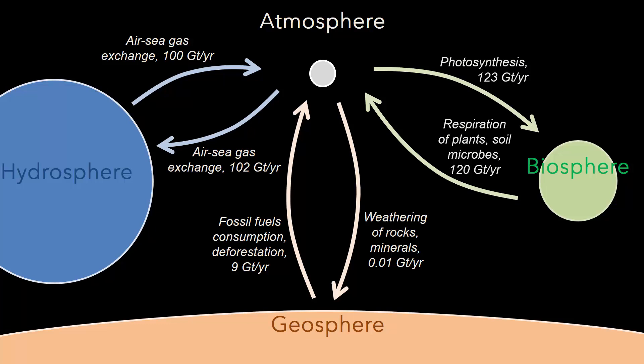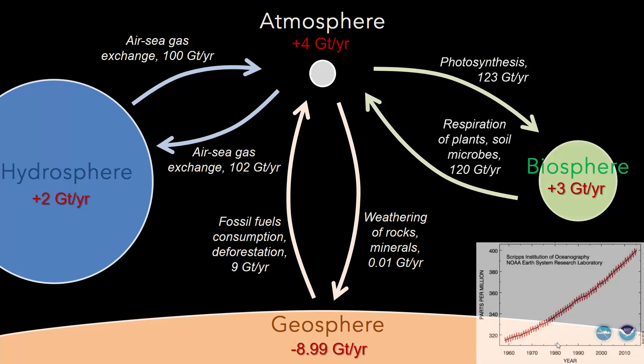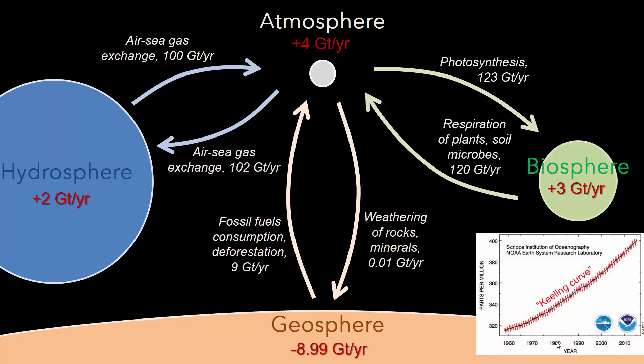However, even with the carbon added to the biosphere and hydrosphere, there are still 4 gigatons unaccounted for that are added to Earth's atmosphere, explaining the steady increase in the Keeling curve that we described earlier. Our review of the Earth's system helps us understand that if we wanted to halt the increase of carbon in the atmosphere, we would have to either reduce human production of carbon by half, or find ways to increase the uptake of carbon in other Earth's system components.